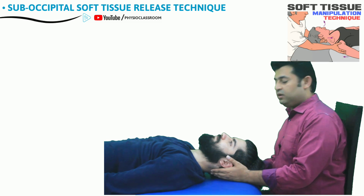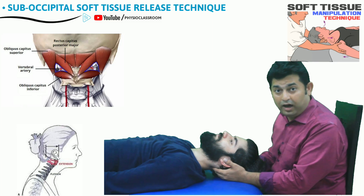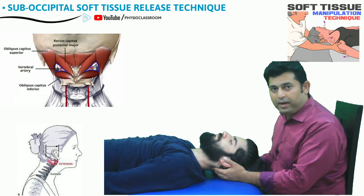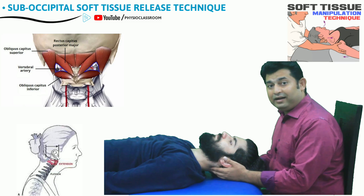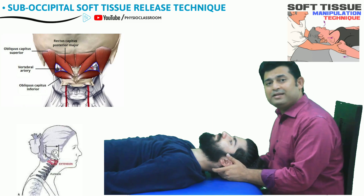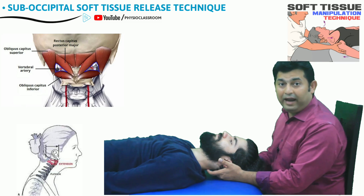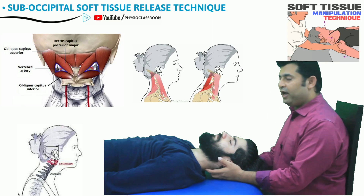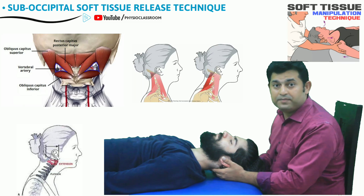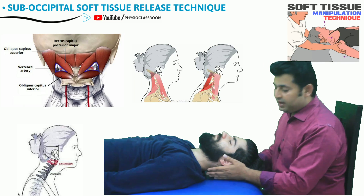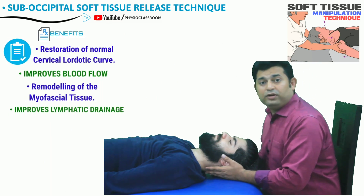I would like to mention important information for physiotherapy students. The important muscles of the suboccipital region we are treating here are the rectus capitis posterior major and minor, and the obliquus capitis superior and inferior. These muscles connect the C1 and C2 spine with the base of the skull, and are responsible for producing upper cervical extension and rotation movements.